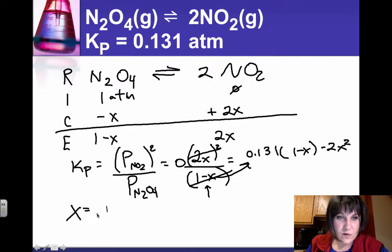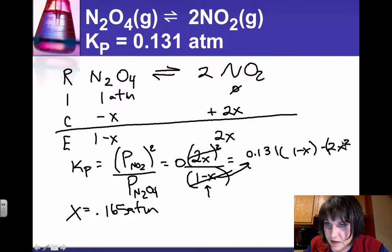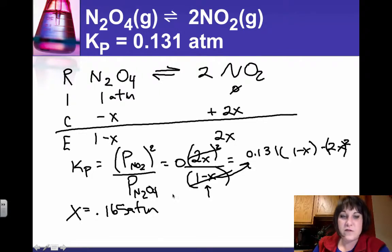So x is 0.165 atmospheres of pressure, and this is what I was talking about. This quantity, the whole thing is squared, so don't leave out those parentheses.